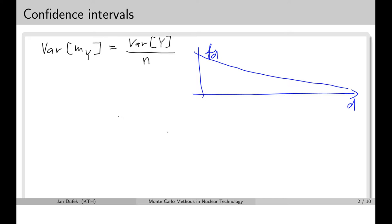For instance, we will sample a value here, then next time the sampled distance may fall at a different location. If we sample a very large number of these values, we will see that the distribution of these values will match the probability density function.